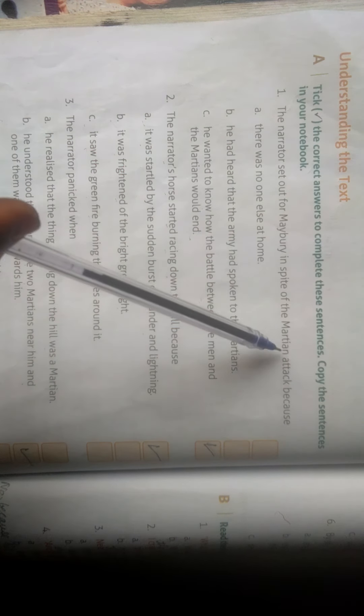Now first, the narrator set out for memory in spite of the martial attack because: A, there was no one else at home; B, he had heard that army had spoken to the Martians; C, he wanted to know how the battle between the men and the Martians would end. The correct answer is C, he wanted to know how the battle between men and the Martians would end.